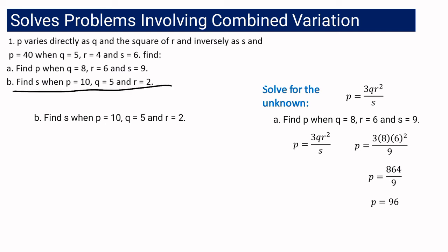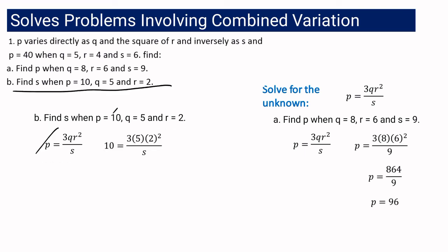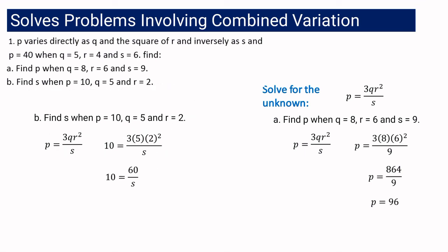For part (b), find s when p is 10, q is 5, and r is 2. Using the same equation, we substitute: 10 equals 3 times 5 times 2 squared over s. Simplifying the numerator: 2 squared is 4, 3 times 5 is 15, and 15 times 4 is 60. Using cross multiplication: 10s equals 60, so s equals 6.